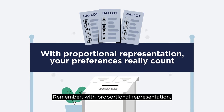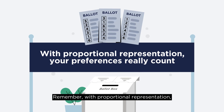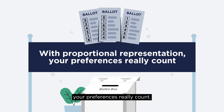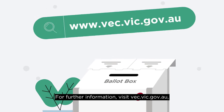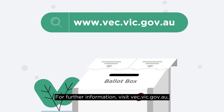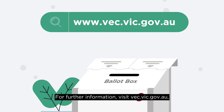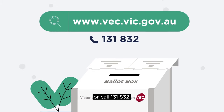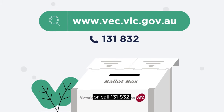Remember, with proportional representation, your preferences really count. For further information, visit vec.vic.gov.au or call 131 832.